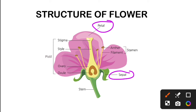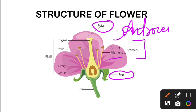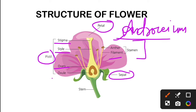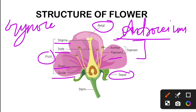Then we have the male reproductive part of the plant, which is the stamen — consisting of anther and filament — and we call the entire male part the androecium. The female reproductive part of the plant consists of stigma, style, ovary, and ovules, and we call it the gynoecium.